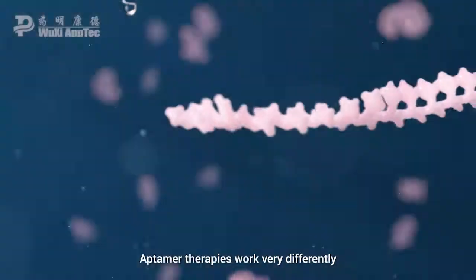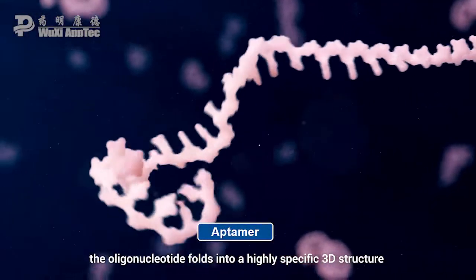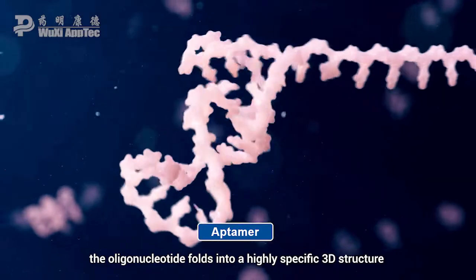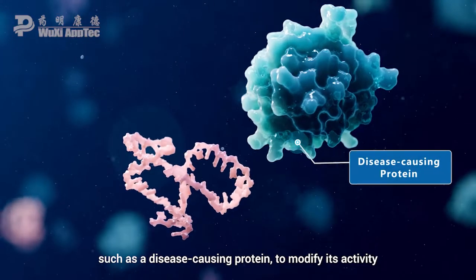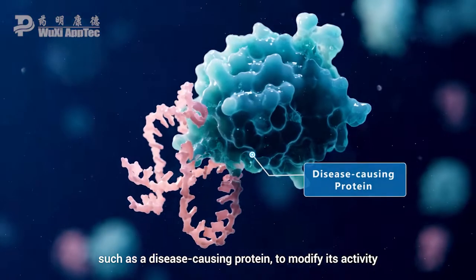Aptomer therapies work very differently. Instead, the oligonucleotide folds into a highly specific 3D structure that complements that of a biomolecule such as a disease-causing protein to modify its activity.